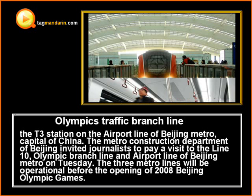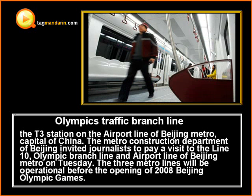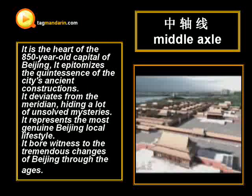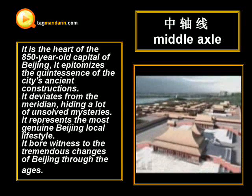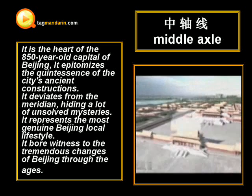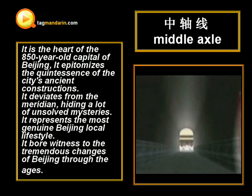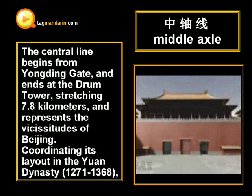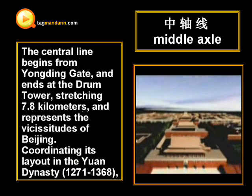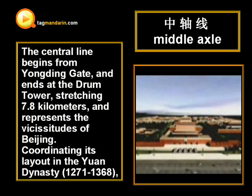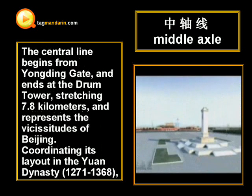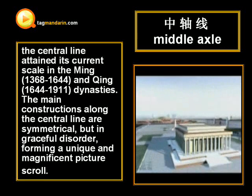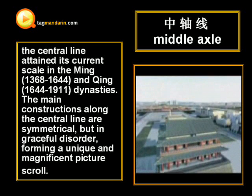It's as the great architect Liang Sicheng put it, the longest and greatest south-north central city line in the world. The unique and magnificent sequence and order of the city are engendered by this line. The central line begins from Yongding Gate and ends at the drum tower, stretching 7.8 km, and represents the vicissitudes of Beijing, coordinating its layout in the Yuan dynasty. The central line attained its current scale.